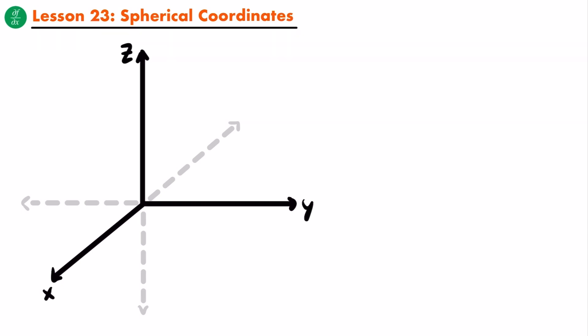Now in this lesson, we are going to look at the second alternative 3D coordinate system, which is the spherical coordinate system. The reason we have these different 3D coordinate systems — the rectangular, the cylindrical, and now the spherical — is because each of them has their advantages and disadvantages, particularly when it comes to representing different types of surfaces in 3D space. We need to introduce the spherical coordinate system.